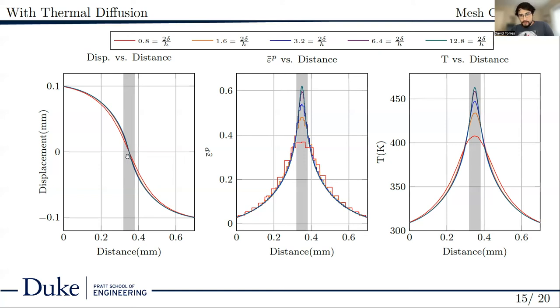First, without considering mesh convergence, we see the expected shear band behavior. The region is characterized by a zone of high displacement, a rapid increase in plastic strain, as well as a temperature increase, with the temperatures reaching around 500 Kelvin.